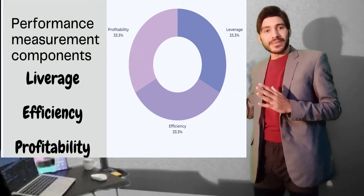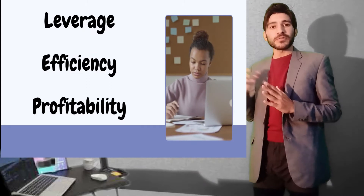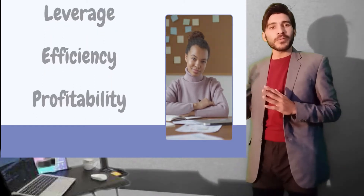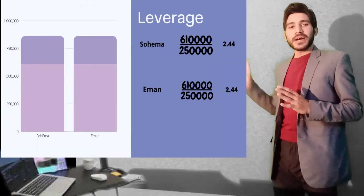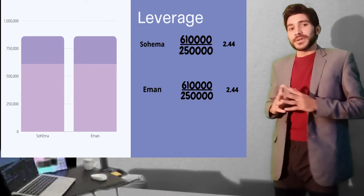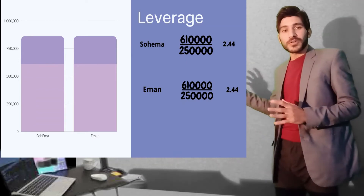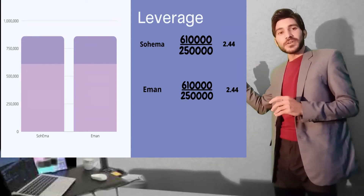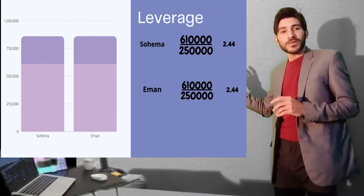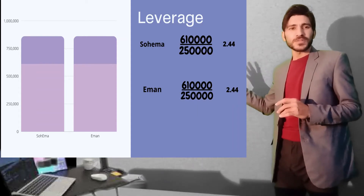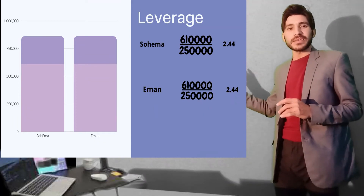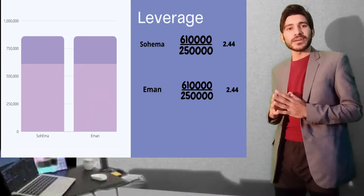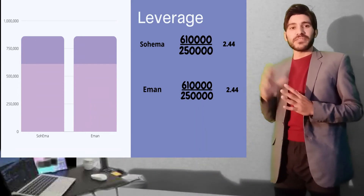We need to identify the issues that exist with Iman Limited. To calculate leverage, we divide total assets by total equity. The leverage of both companies is similar at 2.44, because both companies have a similar amount of assets. So there is no leverage issue with Iman Limited.